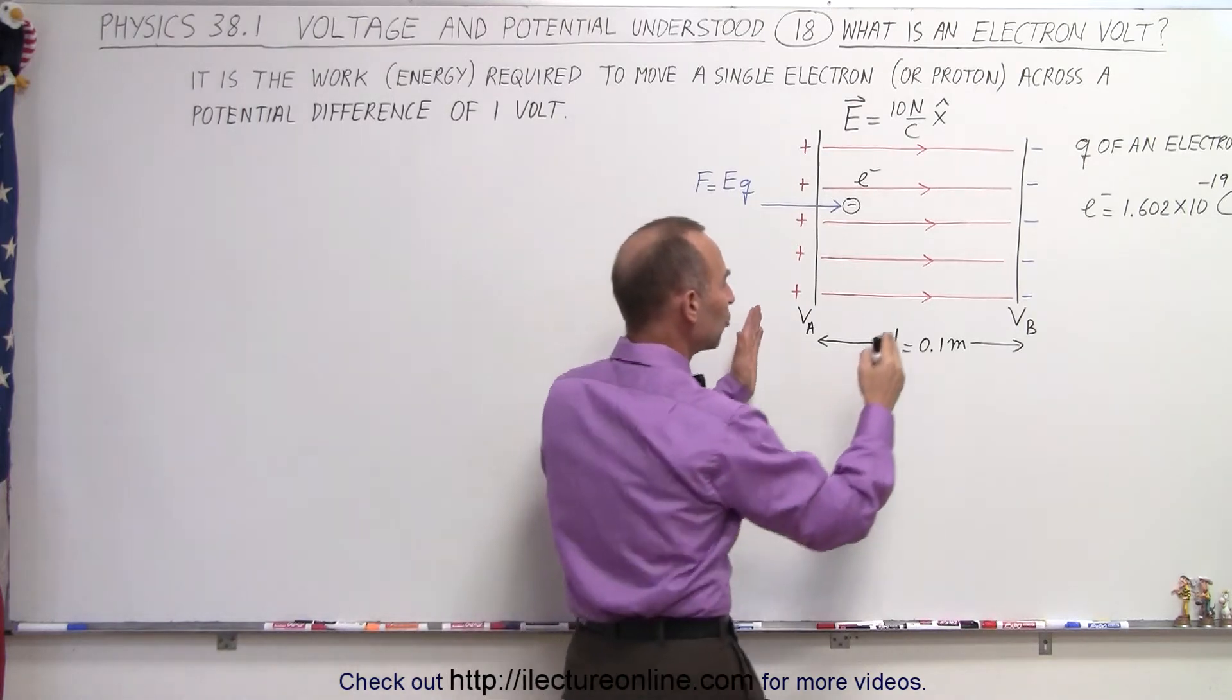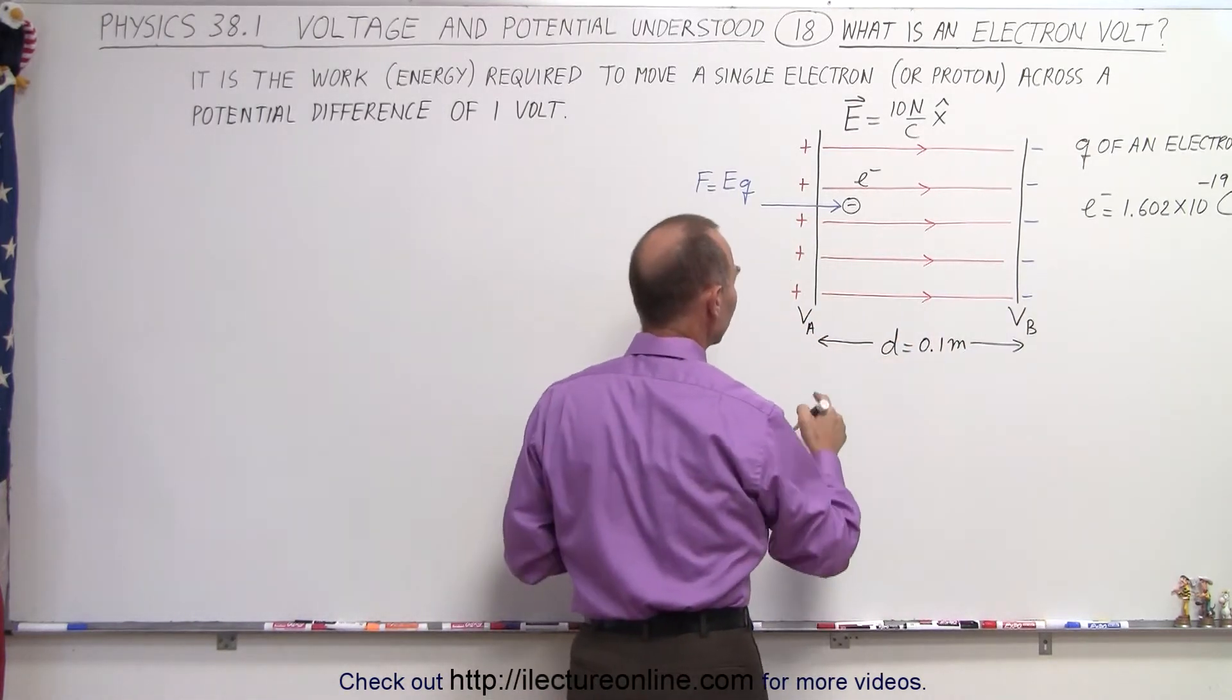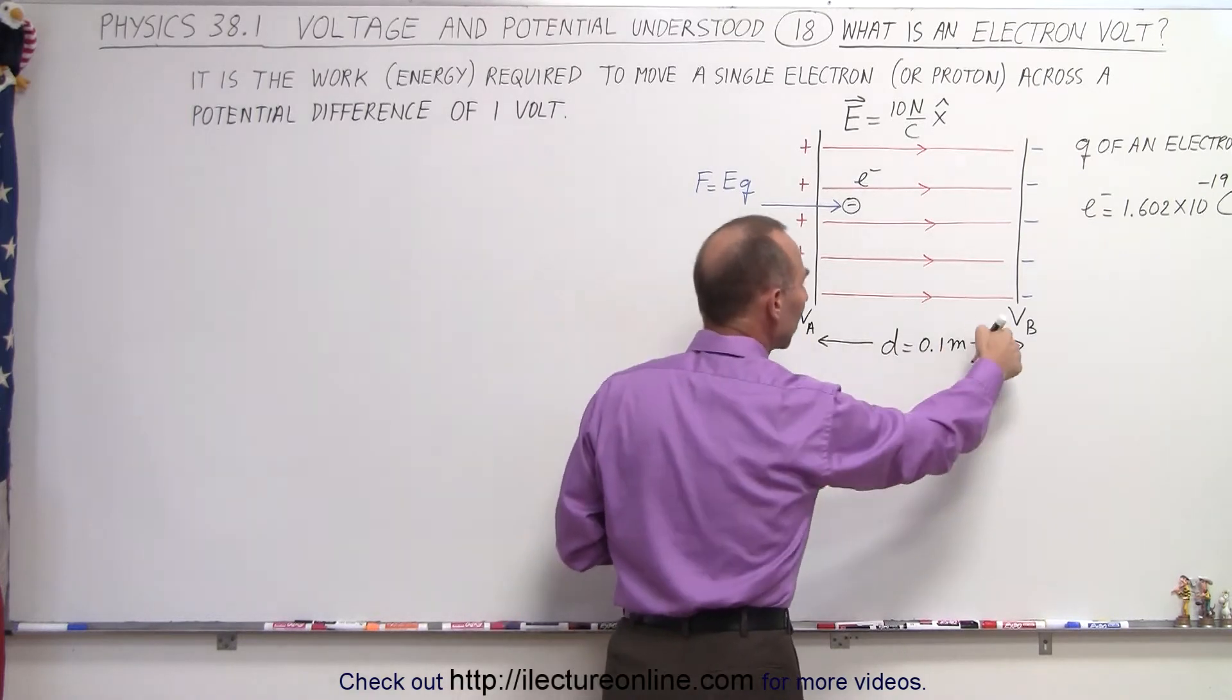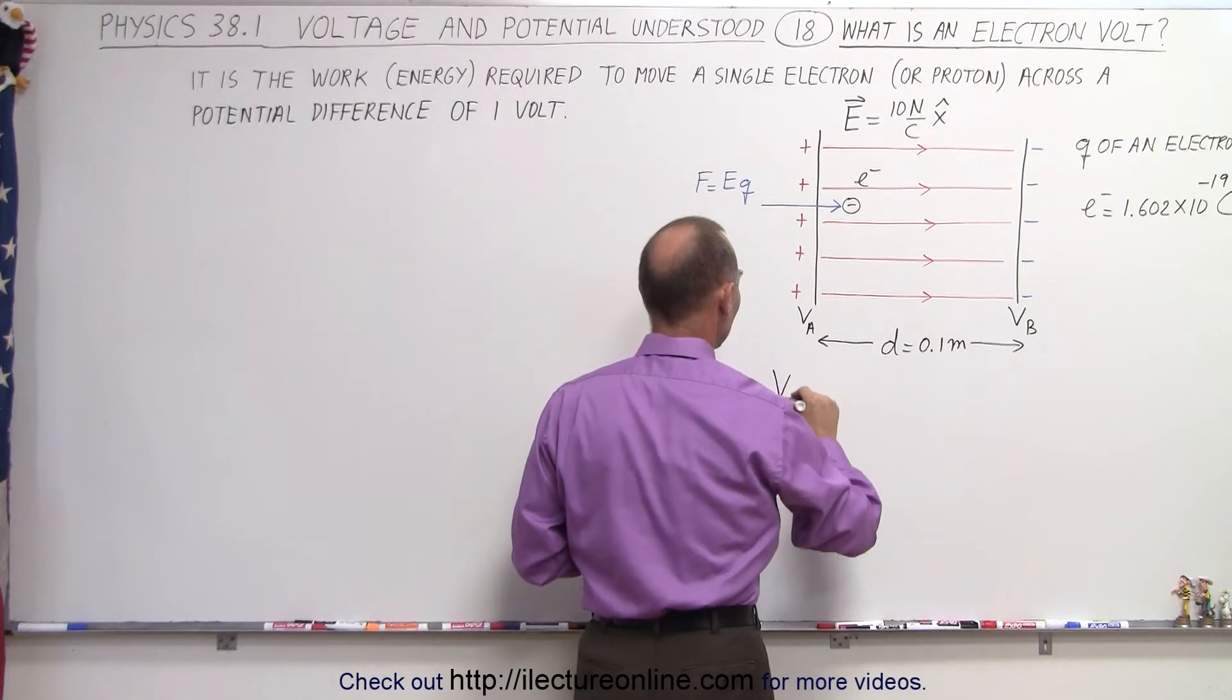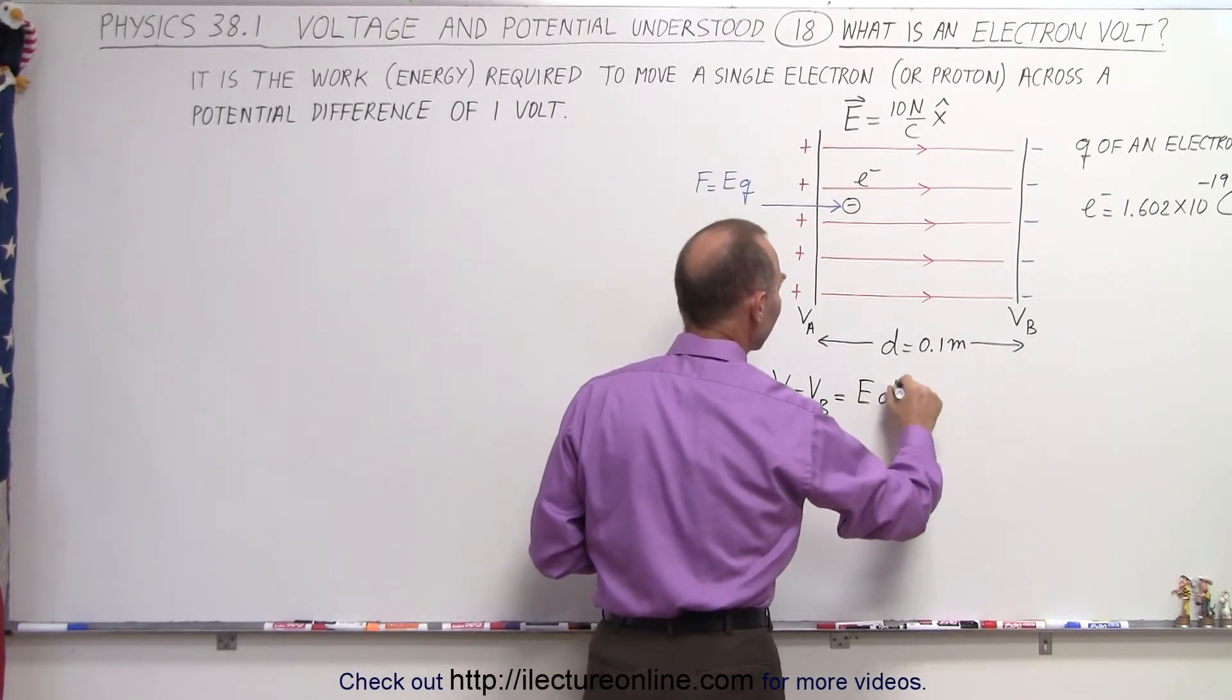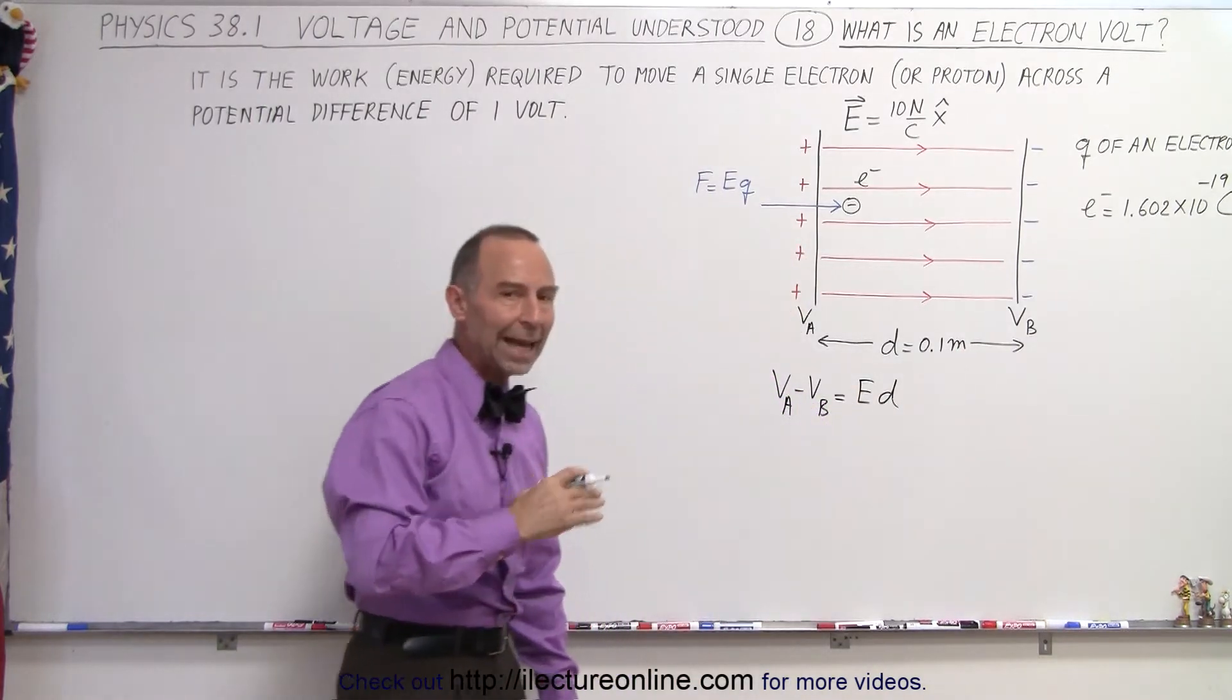So what's the potential difference between the plates? Well in this case we can say that the potential here at A is going to be higher than the potential at B. And the difference VA minus VB is equal to the strength of the field times the distance from A to B.